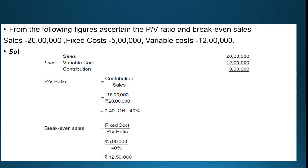The next problem: from the following figures, ascertain the PV Ratio and break-even sales. The information given is: Sales = Rs. 20,00,000, Fixed Cost = Rs. 5,00,000, Variable Cost = Rs. 12,00,000. We need to calculate the PV Ratio and break-even point. First, we calculate contribution, because the PV Ratio formula requires contribution. Contribution = Sales minus Variable Cost.